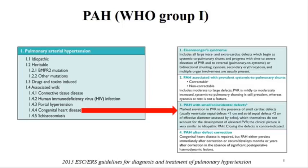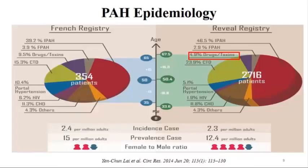If you have a cardiac defect, it doesn't mean it is causing pulmonary hypertension. Often a patient has severe PH and a very small ASD or PFO—that small defect is likely not the cause of the severe PH. In fact, it might act as a safety valve to decompress the right ventricle. Sometimes the PFO may open with right-to-left shunt and Eisenmenger physiology in these cases.